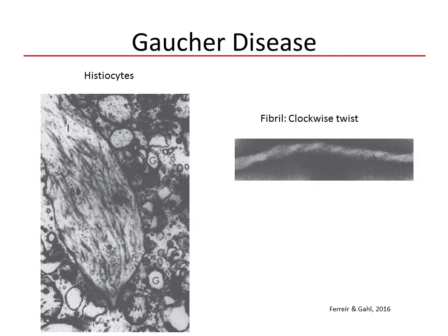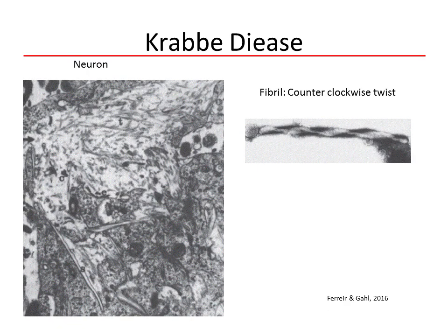The electron micrograph image shows accumulation of tubular material with a clockwise rotation within the bone marrow histiocytes. Krabbe's disease, also known as globoid cell leukodystrophy, is an inheritable disease caused by a decrease or loss of galactosylceramidase enzyme activity. This enzyme is important in the growth and maintenance of myelin, and as such, Krabbe's disease is considered a demyelinating disease. The electron micrograph shows a neuron lysosome with the accumulation of fibular material with a counter-clockwise rotation. Note that although Gaucher's disease and Krabbe's disease are both lysosomal storage diseases, the inclusion bodies can be significantly different, underscoring that inclusion material is not uniform, and both have differing spatial orientations.